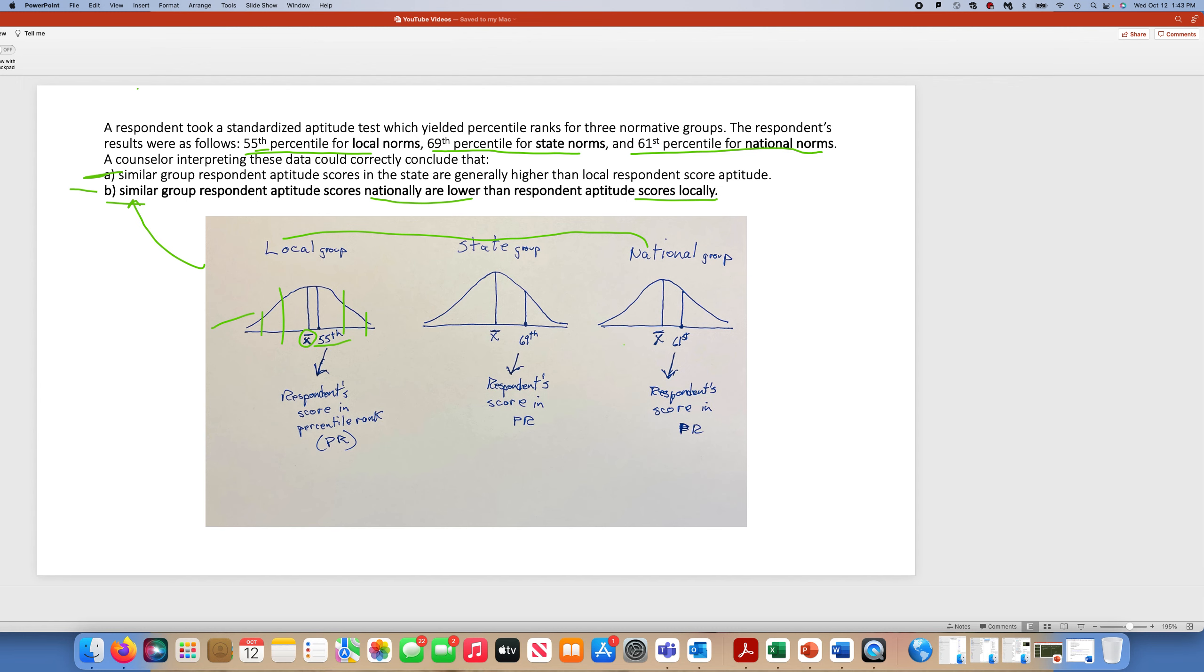Now let's come all the way over here to our national group because that's what we're looking at here. We calculated a mean, and the student, remember they only took the test one time. This aptitude test was only taken one time, and then they're comparing them to three different groups. They were in the 61st percentile.